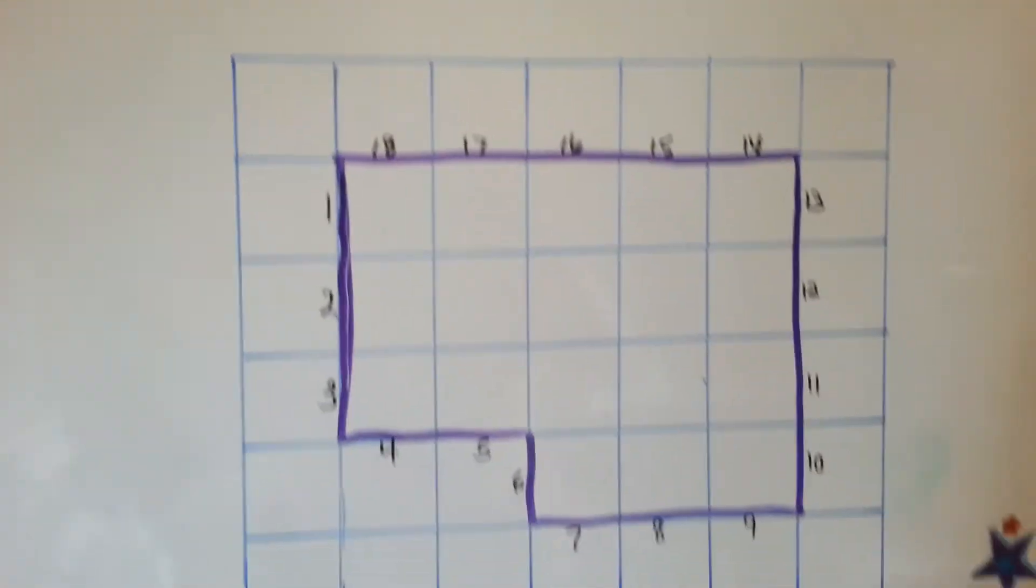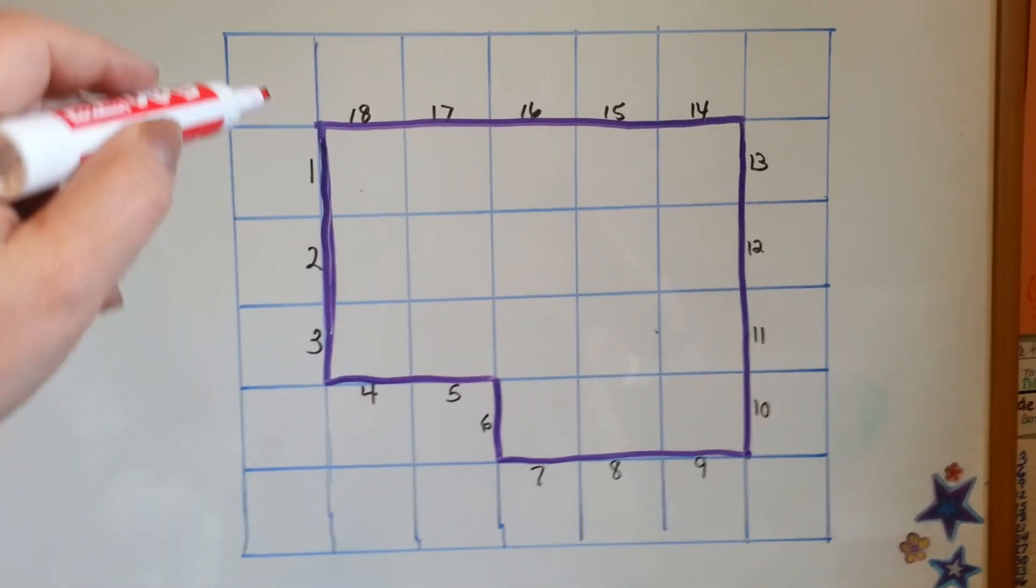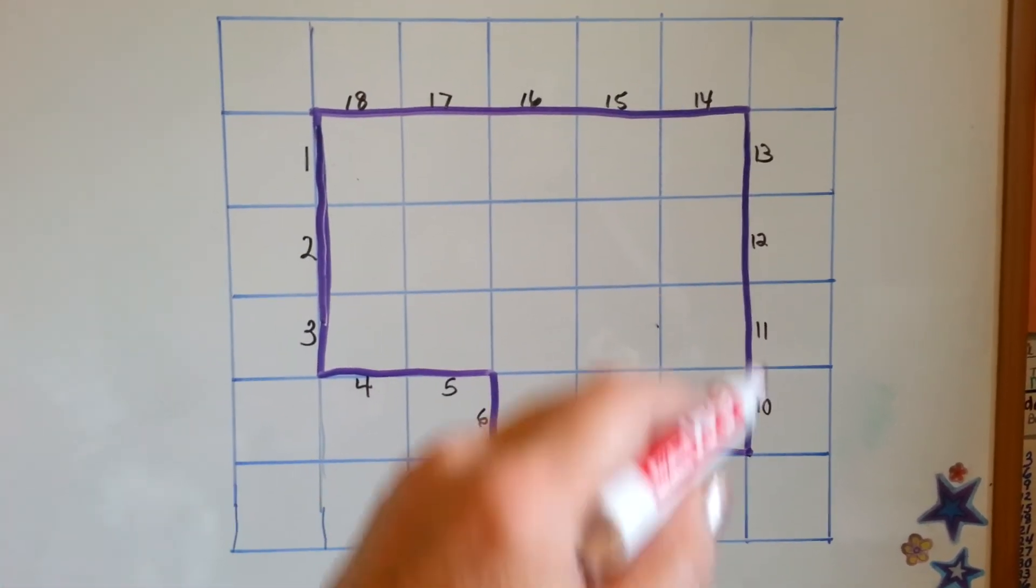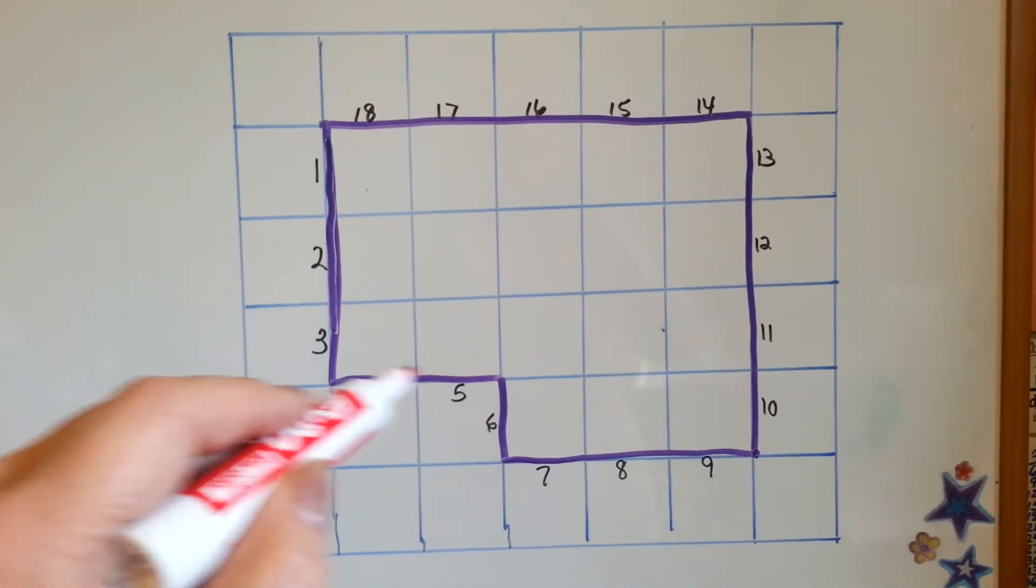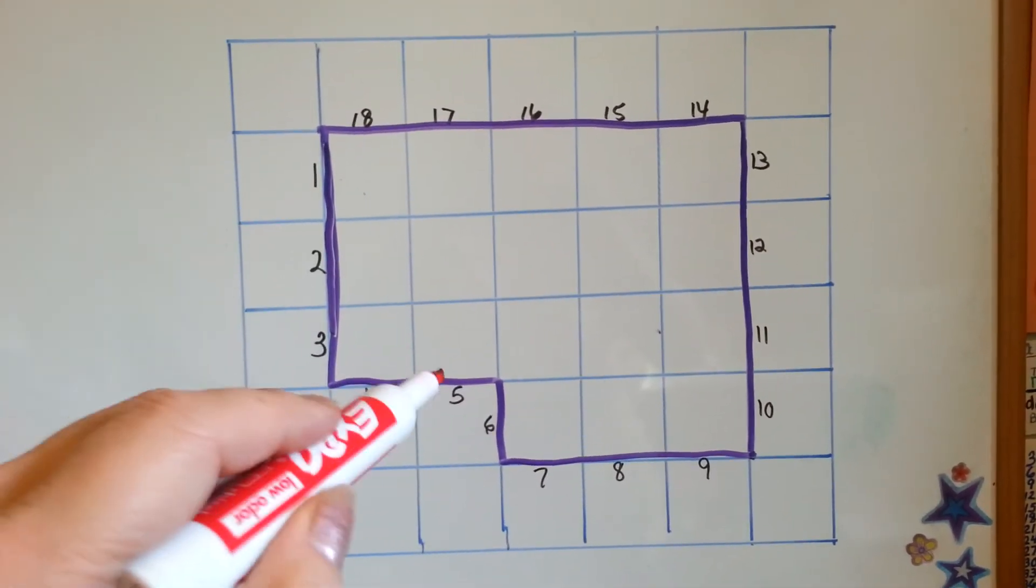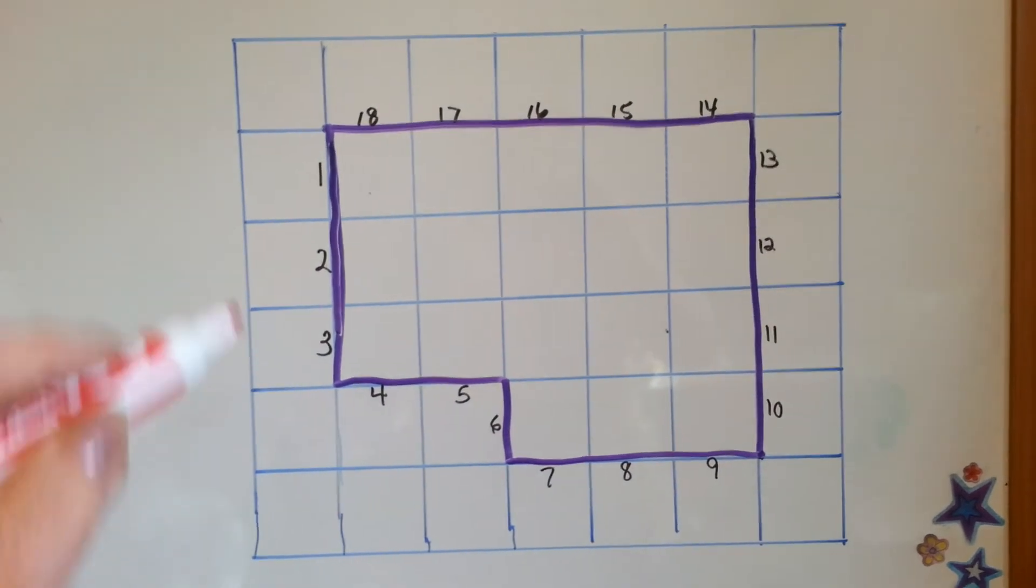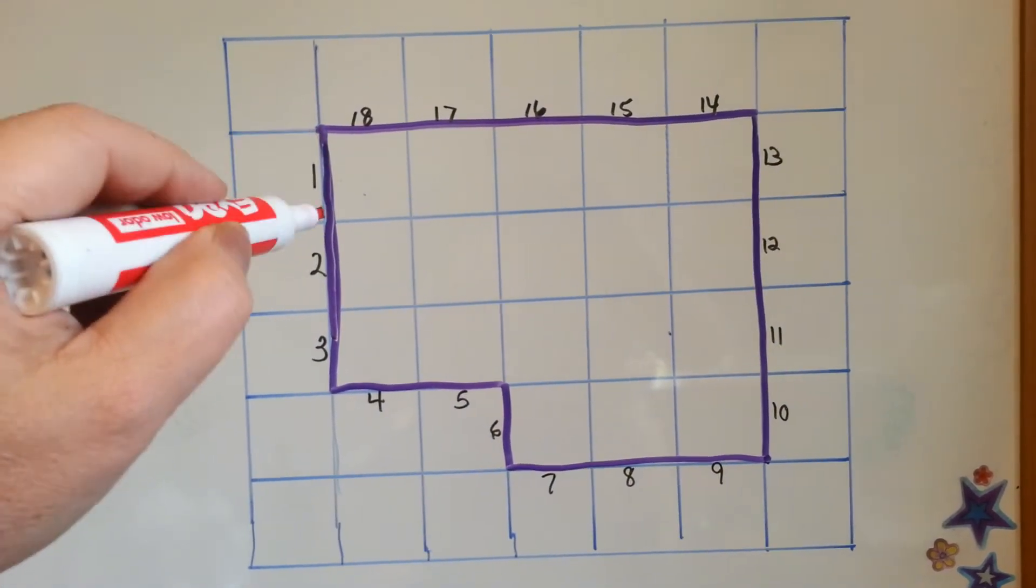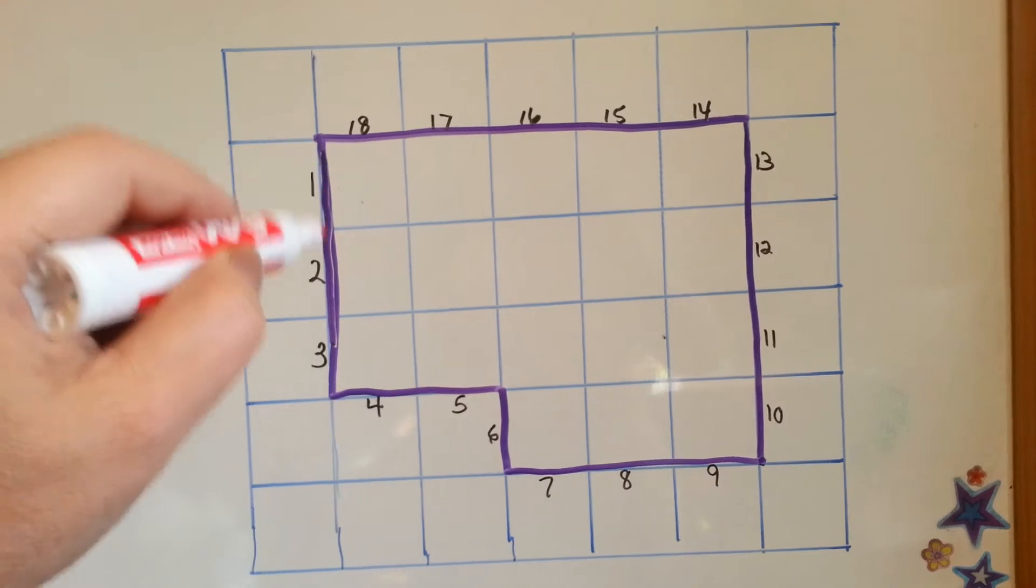Let's look at my grid. Let's say each one of these is 1 inch and I want to know how many inches the perimeter of this purple shape is. We would count each purple line that goes in a block.